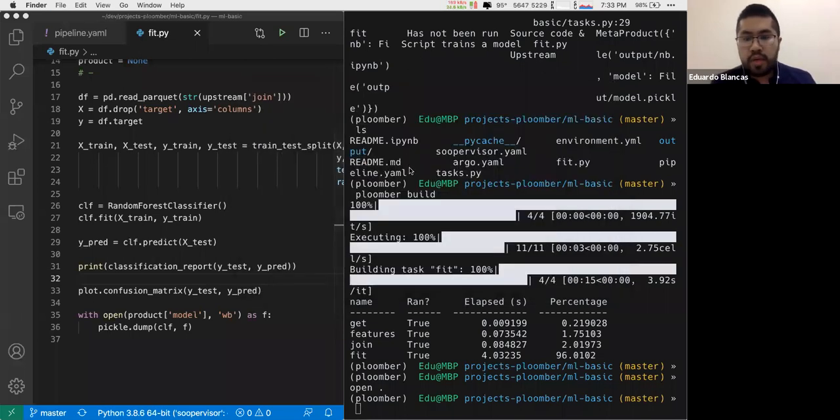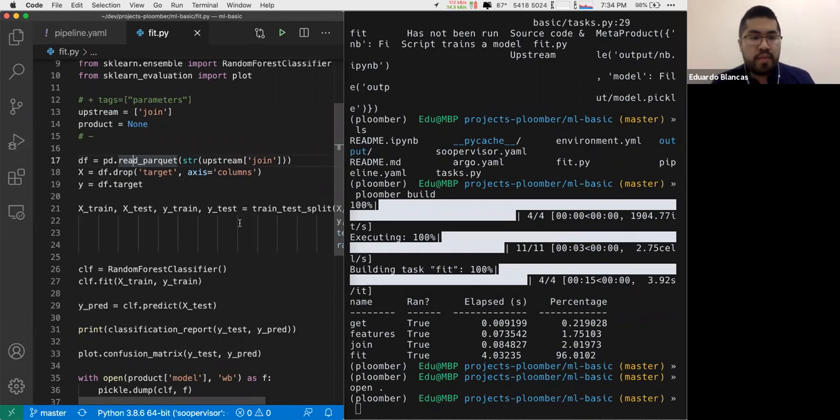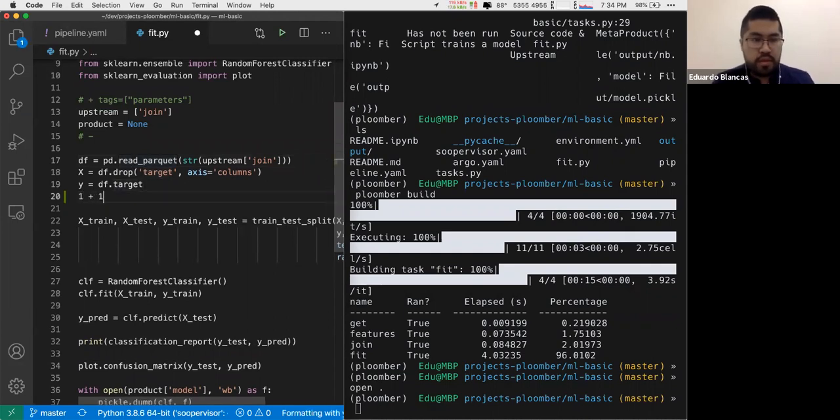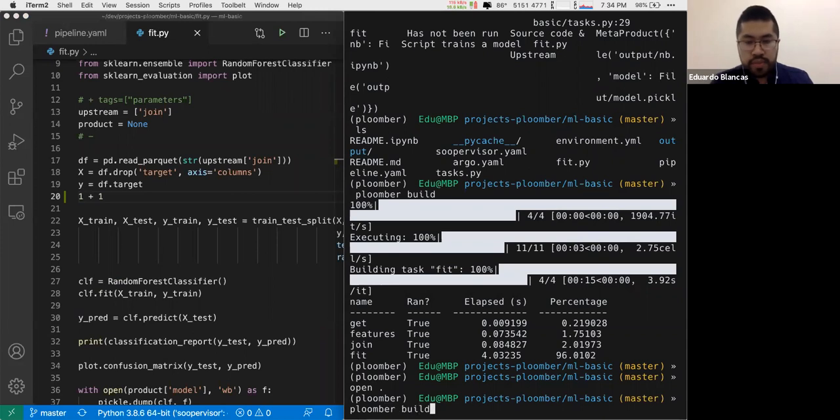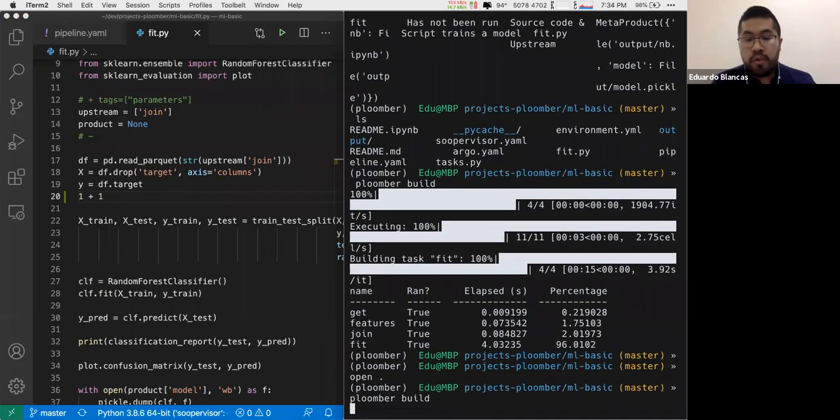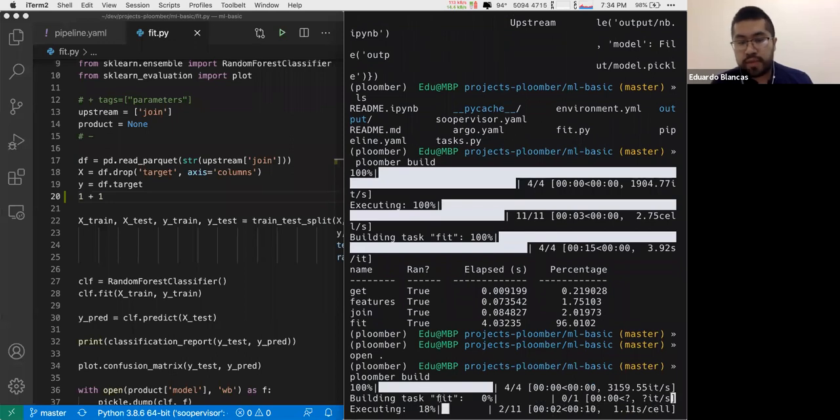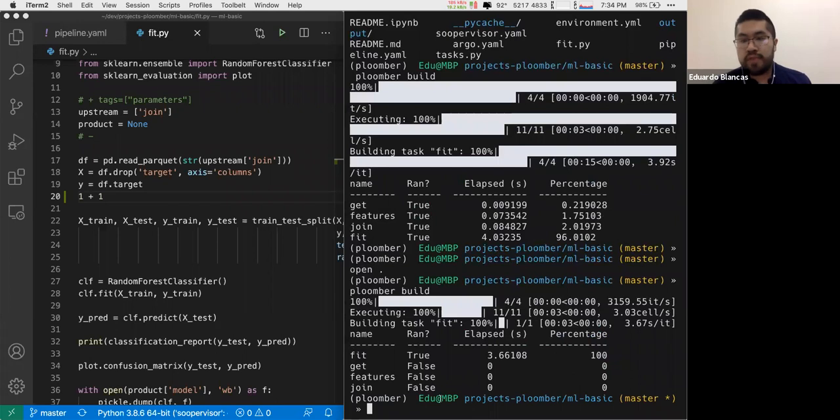One important thing about Plumber is that it keeps track of source code changes. If I modify something in the fit script, I'm just going to add one plus one here, I shouldn't be running the rest of the tasks because they didn't change. All I have to do is run Plumber build again. It's going to notice that most tasks haven't changed, so it's directly running fit. When you have tens of tasks, this is very convenient because you don't have to think about what should I run. It's just automatic.